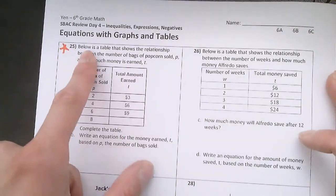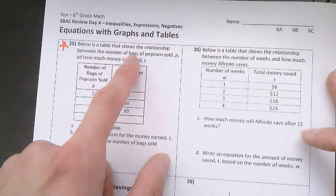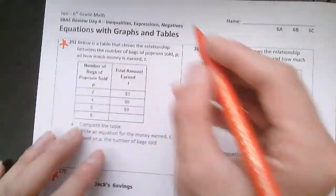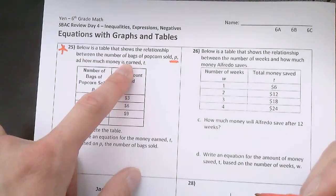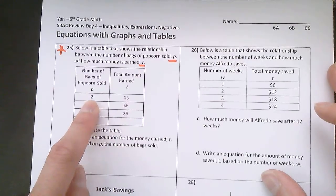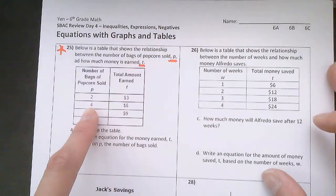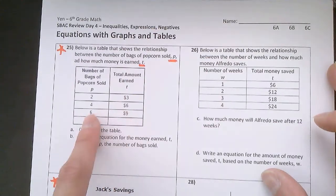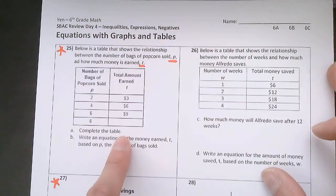Number 25, let's read it. Below is a table that shows the relationship between the number of bags of popcorn sold, which is P, and how much money is earned, which is T. So if I sold two bags of popcorn, I earned $3. If I sold four bags of popcorn, I earned $6. Six bags earns me $9. So it asks me to complete the table.